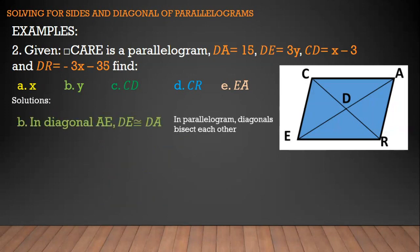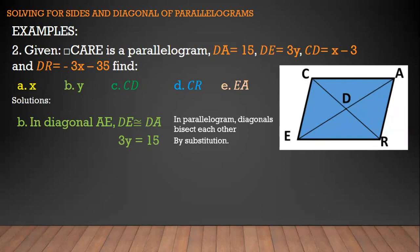Let's find y. In diagonal AE, segment DE is congruent to segment DA. So we use segments DA and DE. Substituting: 3y equals 15. Since no addition property is needed, we divide both sides by 3 directly. 3y divided by 3 equals y, and 15 divided by 3 equals 5. So the value of y is 5.